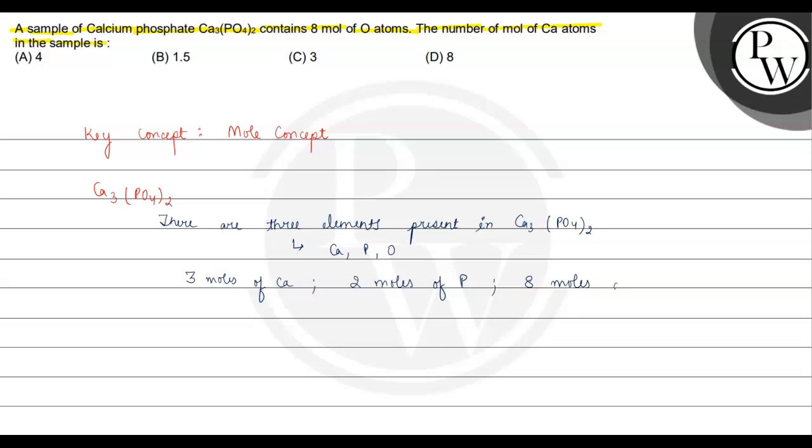So there are 3 moles of calcium. There are 3 moles of calcium atoms present, so the correct and final answer is 3. Hope you understood it well, best of luck.